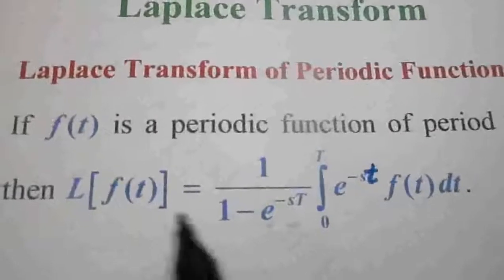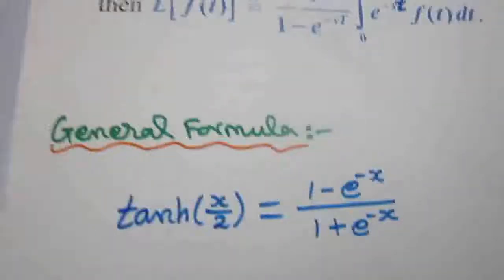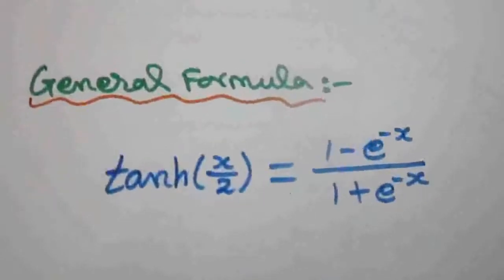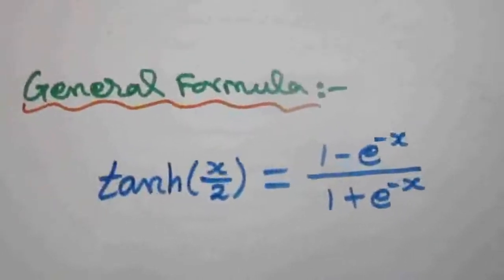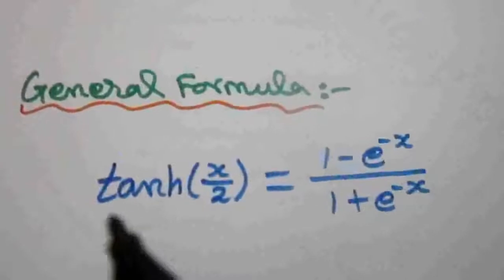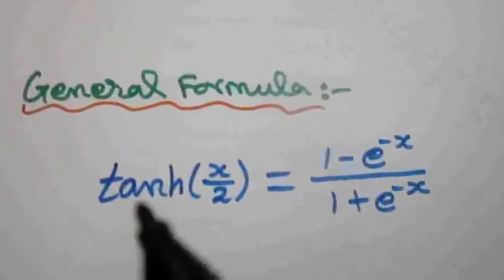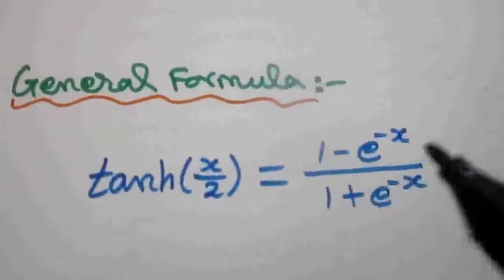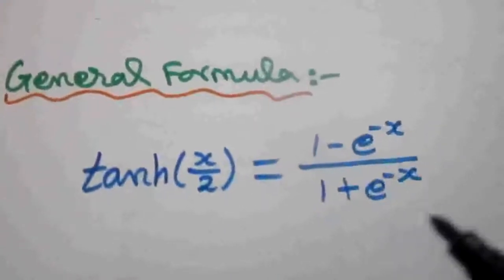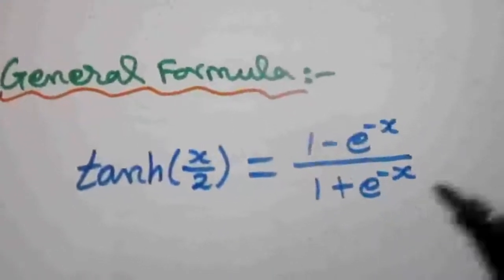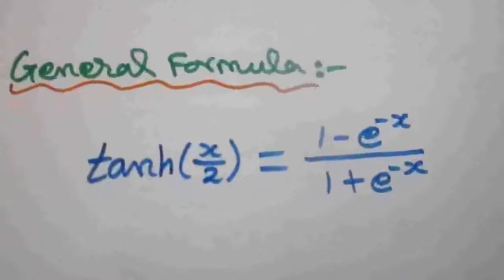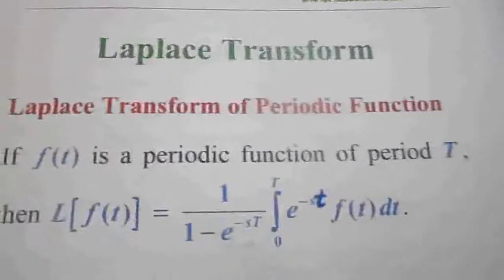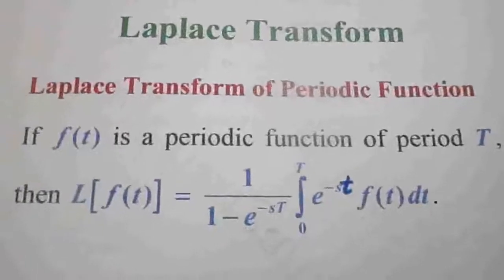To solve the problem we need a general formula. The formula we need to apply at the end of the problem is: tanh of x by 2 is equal to 1 minus e power minus x, divided by 1 plus e power minus x. This is the definition and formula we will apply.